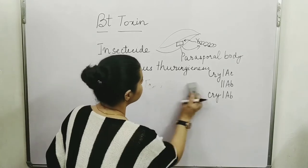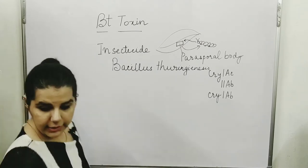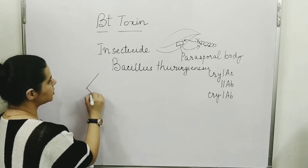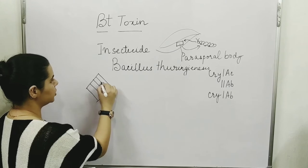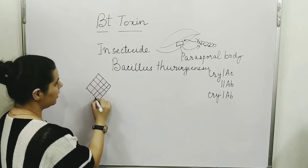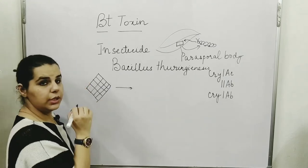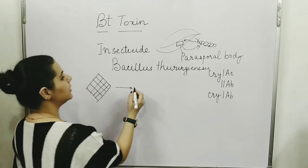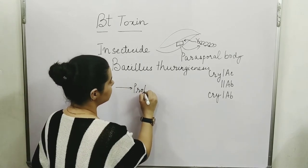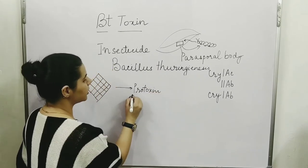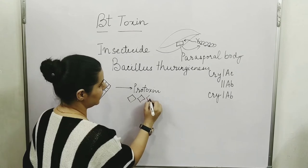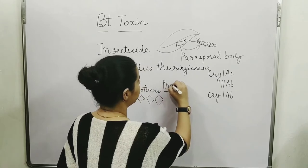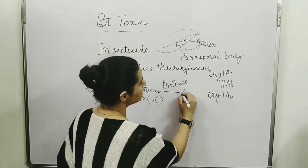This is our insect which has ingested this crystalline parasporal body. Due to the alkaline nature of the intestine, due to the alkaline nature of the gut, this gets converted into the active toxin.